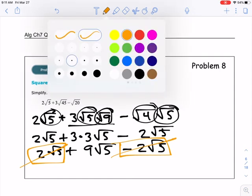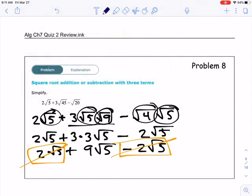Alright, and then, so no adding necessary on this one. Just get 9 times the square root of 5, and you're good to go. Alright, I'm going to stop the video there, and then we will pick up at problem 9 for the third video. Thanks.